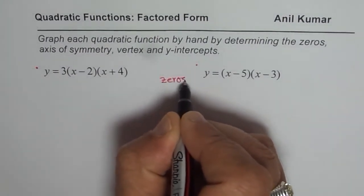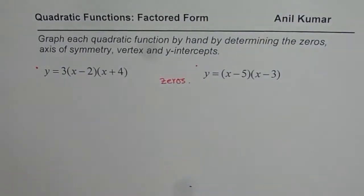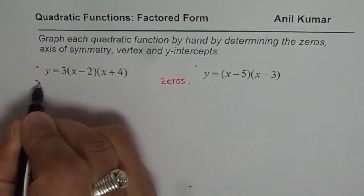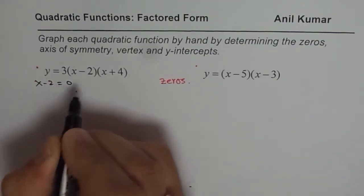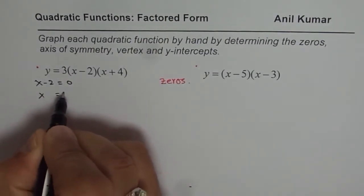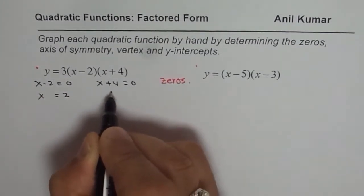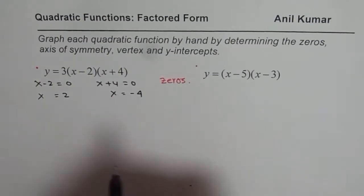That is my first step. Let us find zeros first. Zero here means x minus 2 should be equal to zero, so x equals 2. Or we could have x plus 4 equals zero, which gives us x equals minus 4.